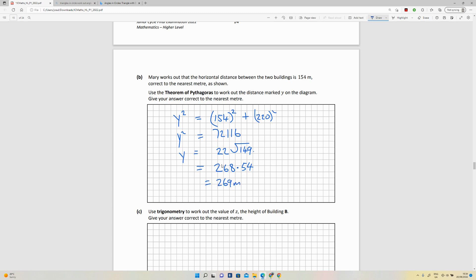And they want it correct to the nearest meter, so we're going to make that 269 meters. So y is equal to 269 meters. So that's our answer using Pythagoras. The square of the hypotenuse is equal to the square of the other two sides. That is part B, part C.